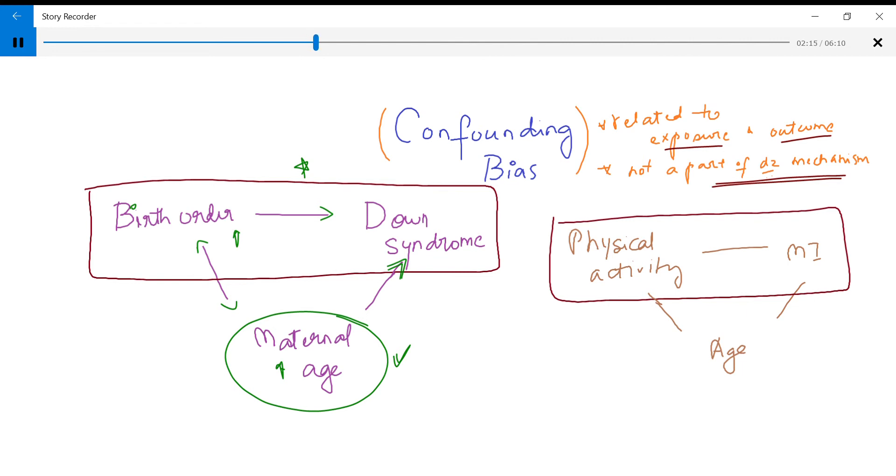So as soon as you include maternal age as one of the criteria, you will see that the association between birth order and Down syndrome disappears. That is what a confounding bias is. So once you include the confounding factor, inclusion of the confounding factor makes the false association disappear.